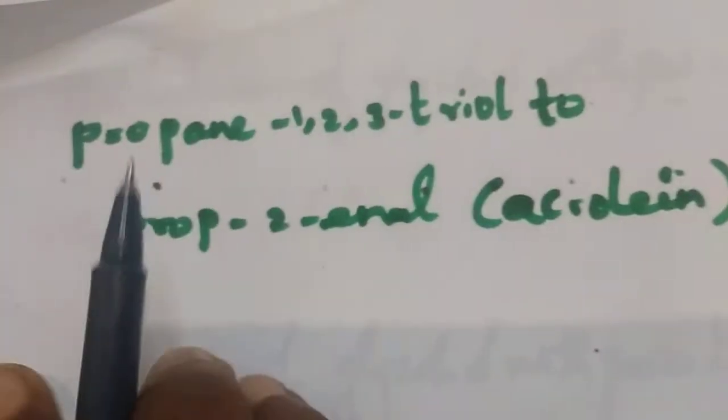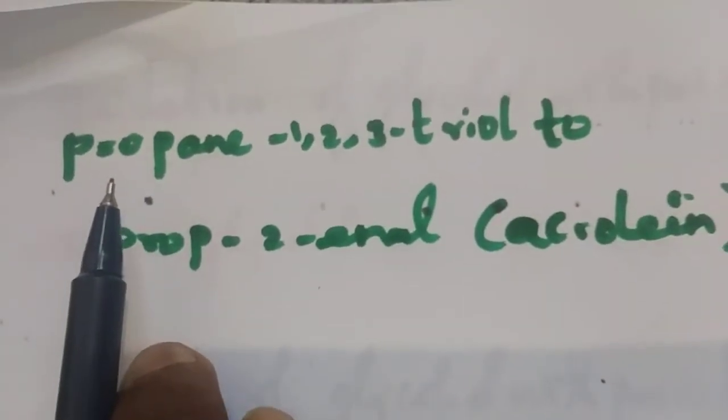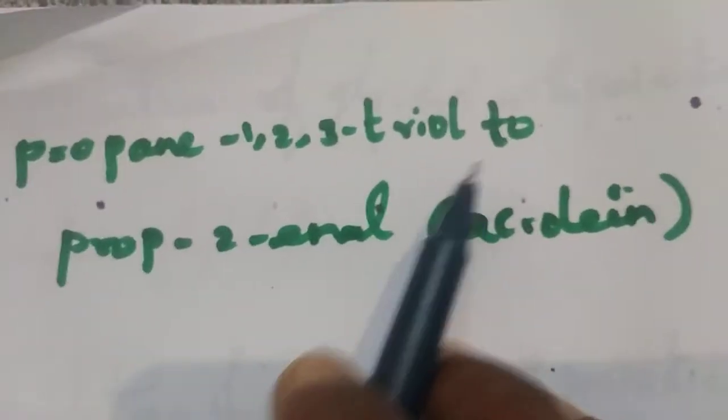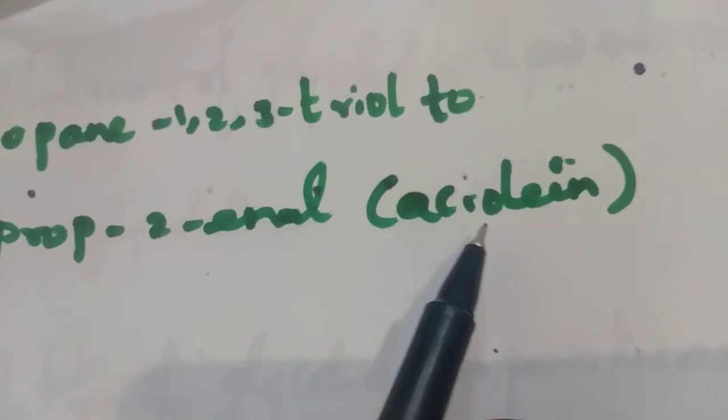Hi dear students, in this video I am going to talk about propane-1,2,3-triol to prop-2-enol. This common name is acrolein.